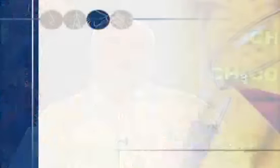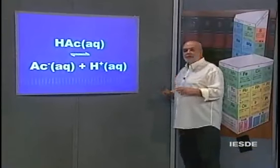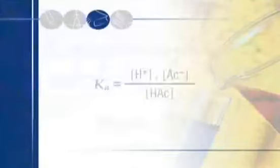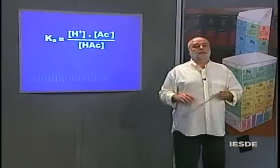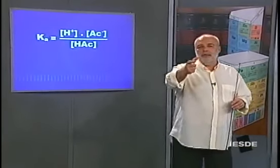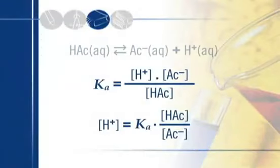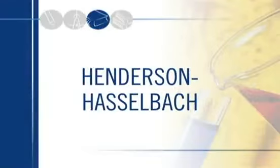É assim o funcionamento de um tampão. Considere novamente o equilíbrio do ácido acético, escrito de maneira simplificada: HAc ⇌ Ac⁻ + H⁺. Qual será a expressão de Ka para esse equilíbrio? Ka é concentração de H⁺ vezes concentração de Ac⁻ sobre concentração de HAc. Vamos reescrever evidenciando a concentração de H⁺, que será nosso gancho para o pH.